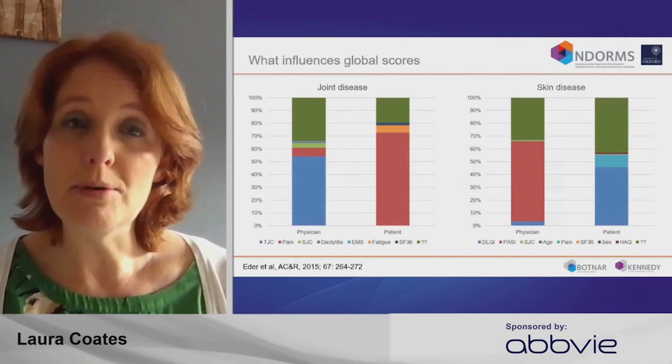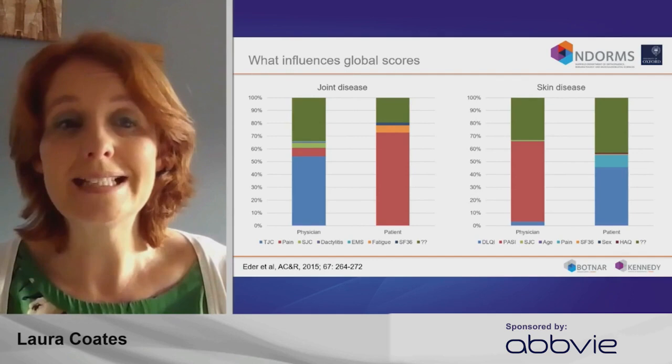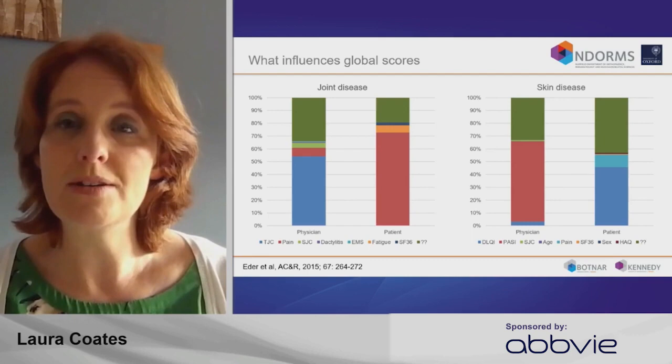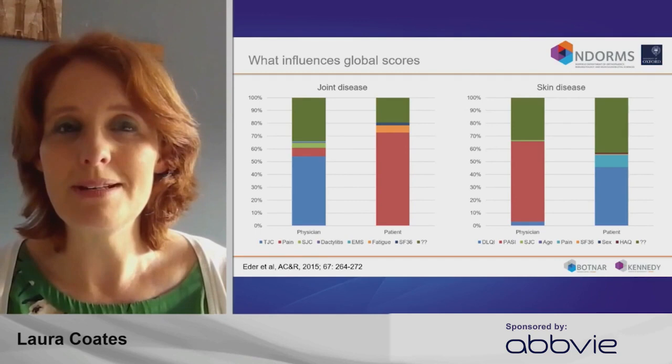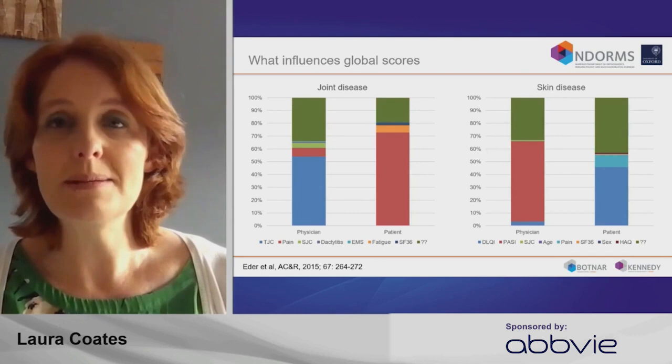If we look in more detail at psoriatic arthritis, you can see why. On the left-hand side, if you look at joint disease, the majority of what the physician considers to be active disease is indicated by tender joint counts, swollen joint counts, and a little by pain score. However, in contrast, if you look at patients, the biggest thing driving their opinion of global disease activity is pain and fatigue — so it's more about symptoms and impact than joint counts.